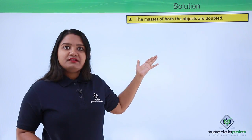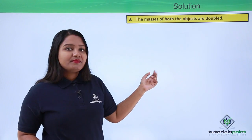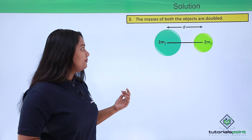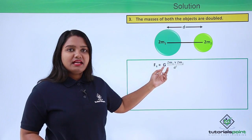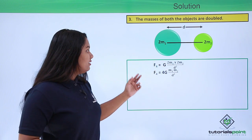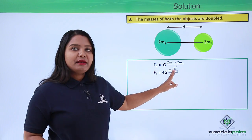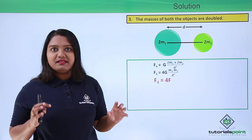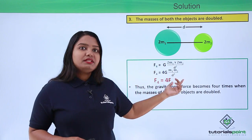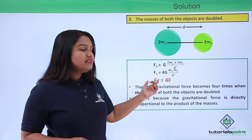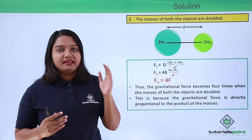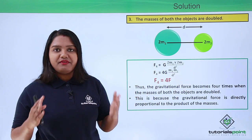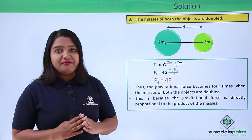For the third case, we calculate the force when the masses of both objects are doubled. So here we have masses 2M1 and 2M2, with the distance between them remaining the same, d. The force F4 equals G into 2M1 into 2M2 divided by d squared, which gives F4 equals 4G M1 M2 divided by d squared, and this equals 4F. When both masses are doubled, the gravitational force becomes 4 times, because the force is directly proportional to the product of the two masses, and when both are increased by a factor of 2, the force increases by a factor of 4.